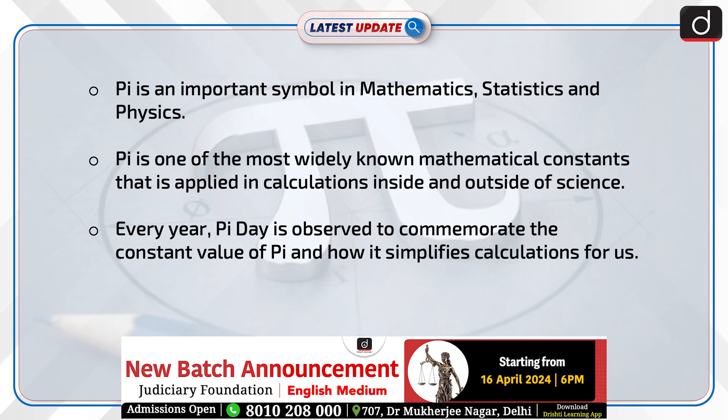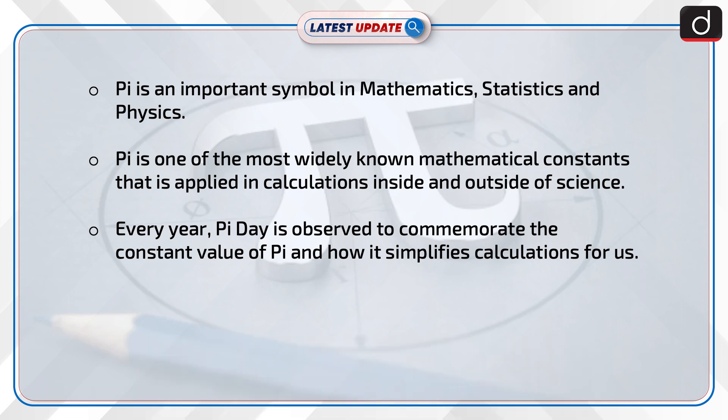Pi is an important symbol in mathematics, statistics, and physics. Pi is one of the most widely known mathematical constants that is applied in calculations inside and outside of science.